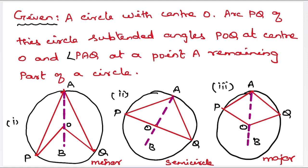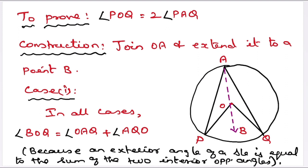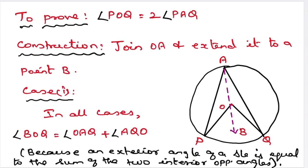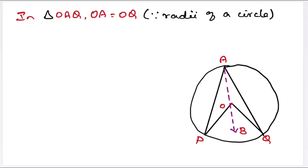First, join AO and extend it to point B. In all three cases, we have angle BOQ is equal to angle OAQ plus angle AQO, because an exterior angle of a triangle is equal to the sum of the two interior opposite angles. In triangle OAQ, OA is equal to OQ, as they are radii of the circle. Therefore, angle OAQ is equal to angle OQA.